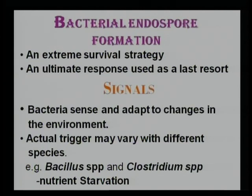The actual trigger may vary with different species. In Bacillus species and certain Clostridium species, nutrient starvation triggers endospore formation. More specifically, Clostridium perfringens undergoes sporulation in response to nutrient deprivation like inorganic phosphates, while in Clostridium cellulolyticum, cellobiose starvation leads to sporulation.